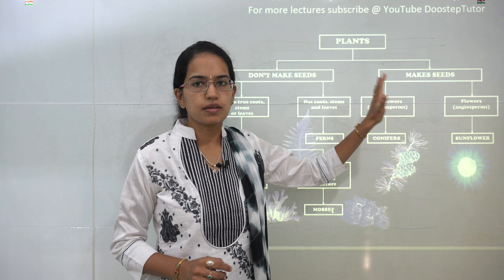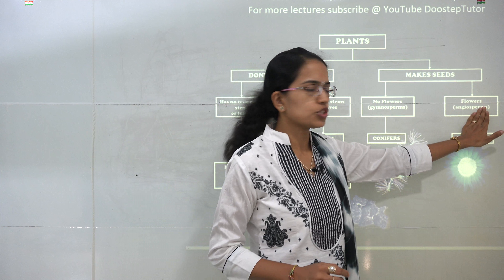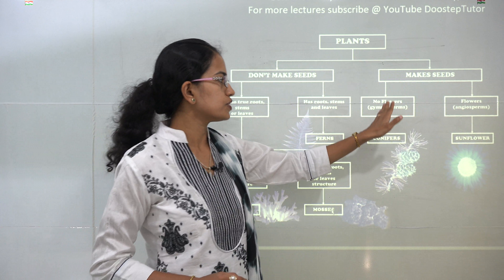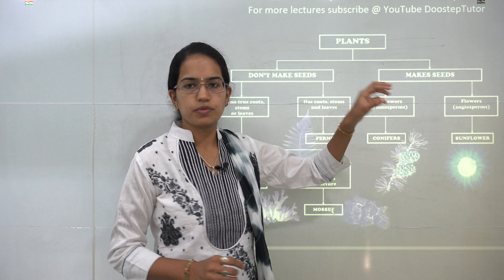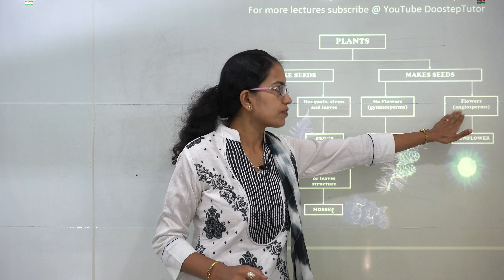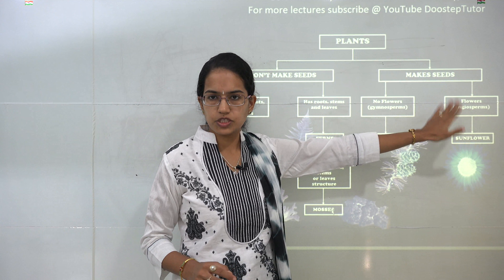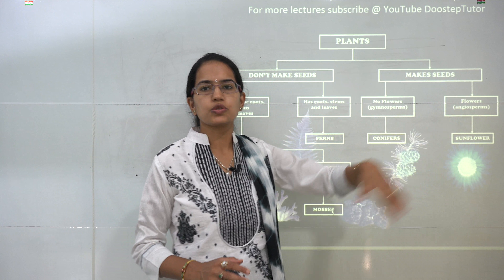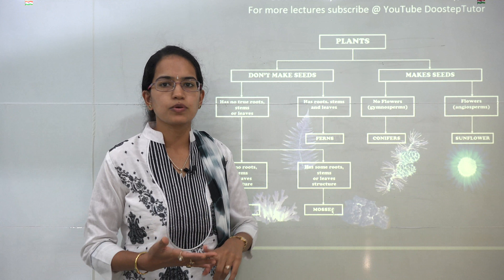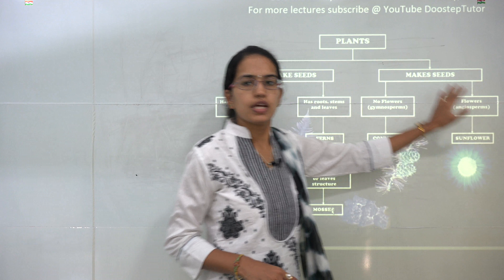Gymnosperms are the plants which do not have flowers. However, angiosperms bear flowers. A good example of gymnosperms would be pinus and the Christmas tree. Those which bear flowers include all the flowering plants like sunflower, tulip, and rose. All those would fall under angiosperms.